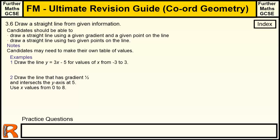3.6: Draw a straight line from given information. This is part of my Ultimate Revision Guide to Further Maths GCSE, in the Coordinate Geometry section.